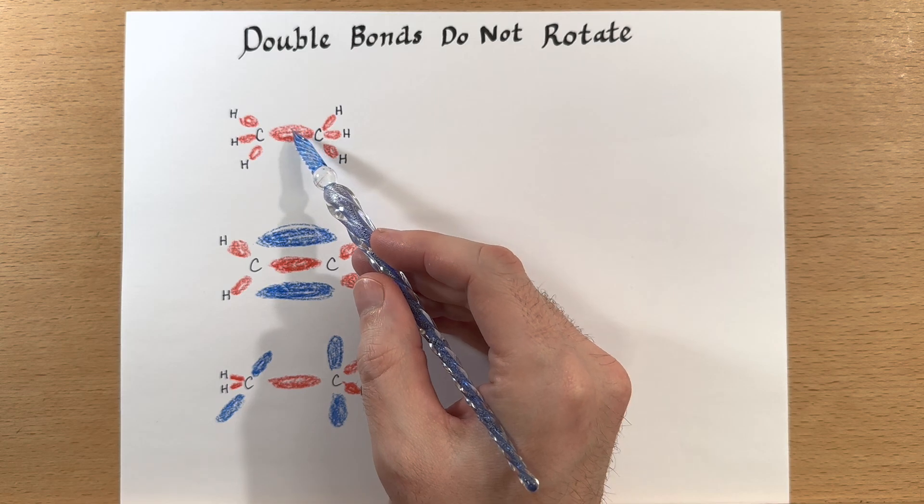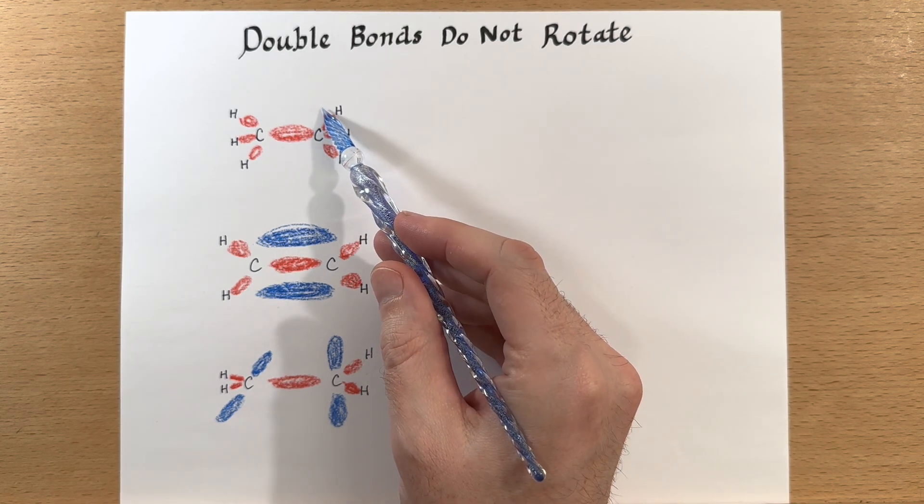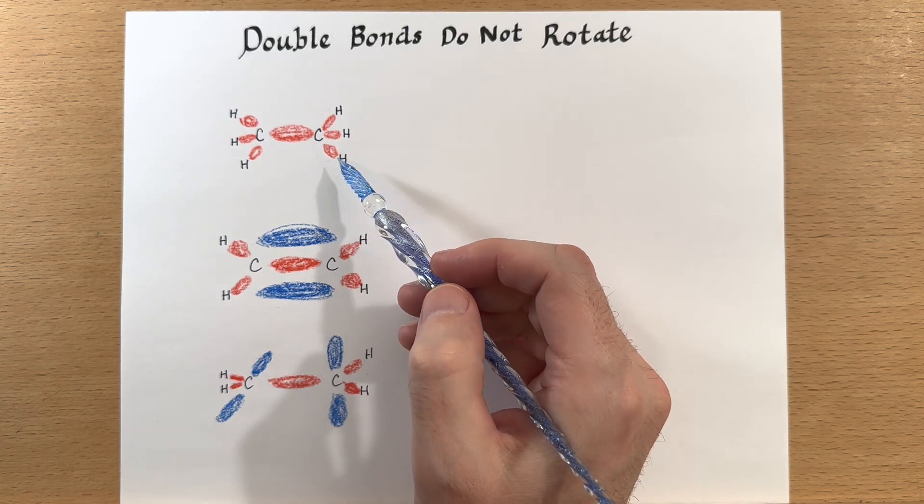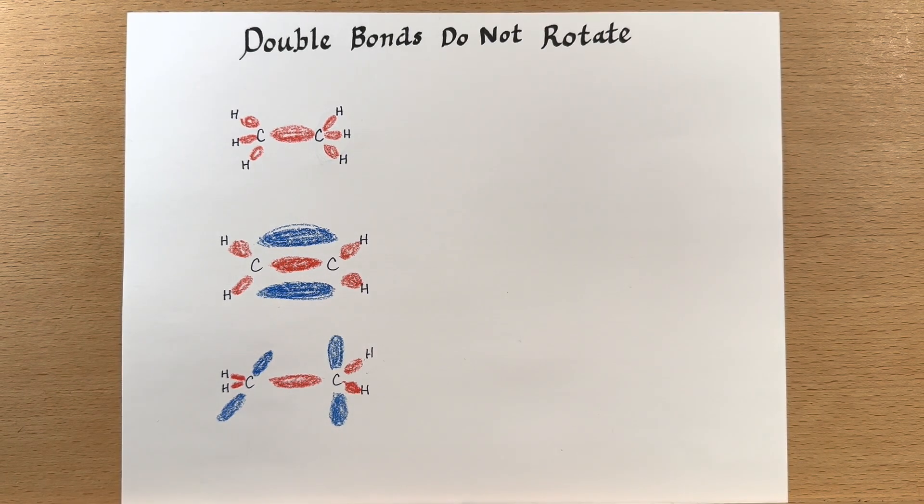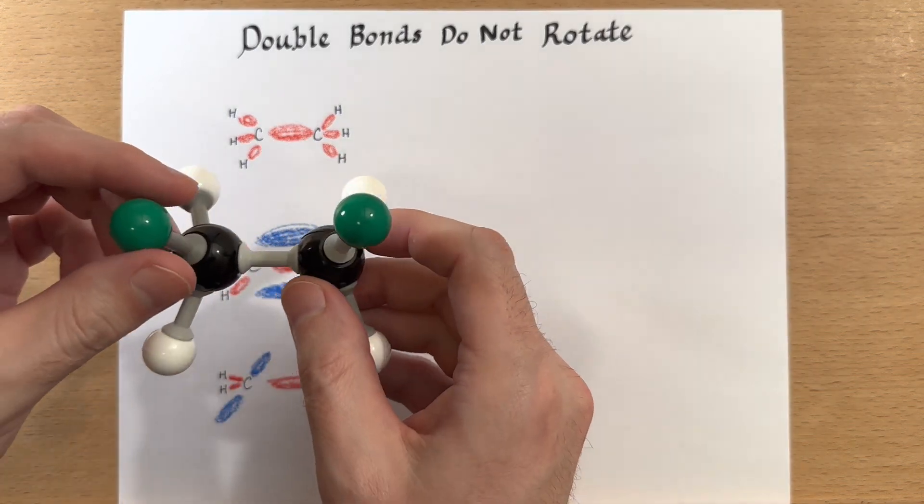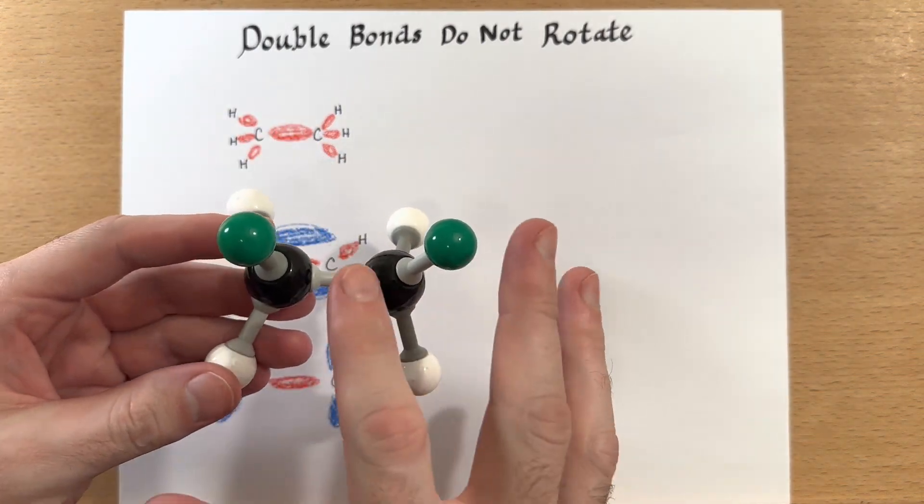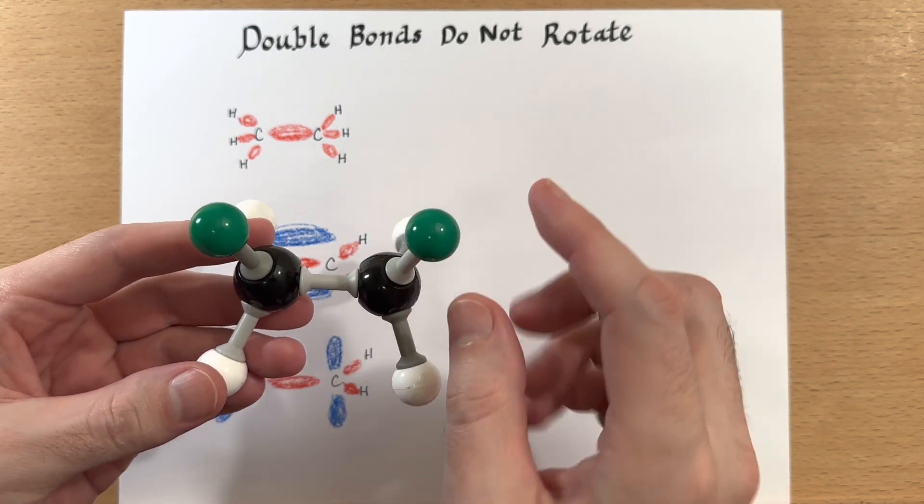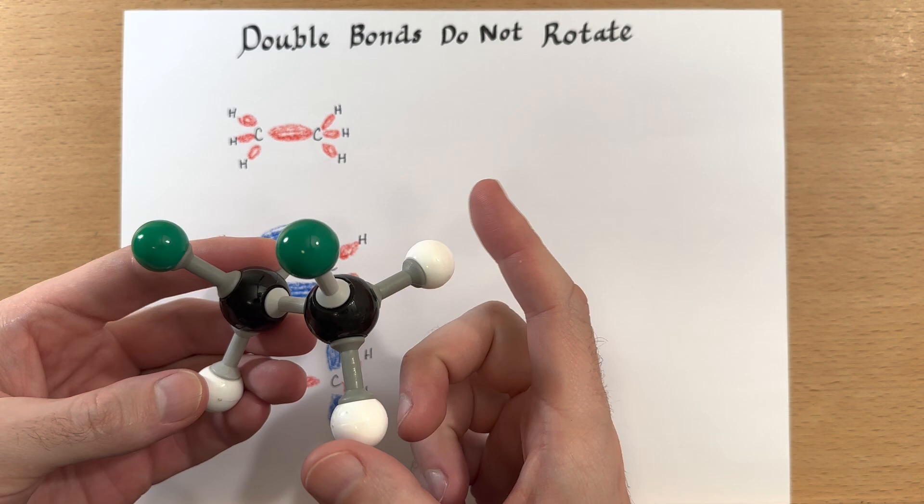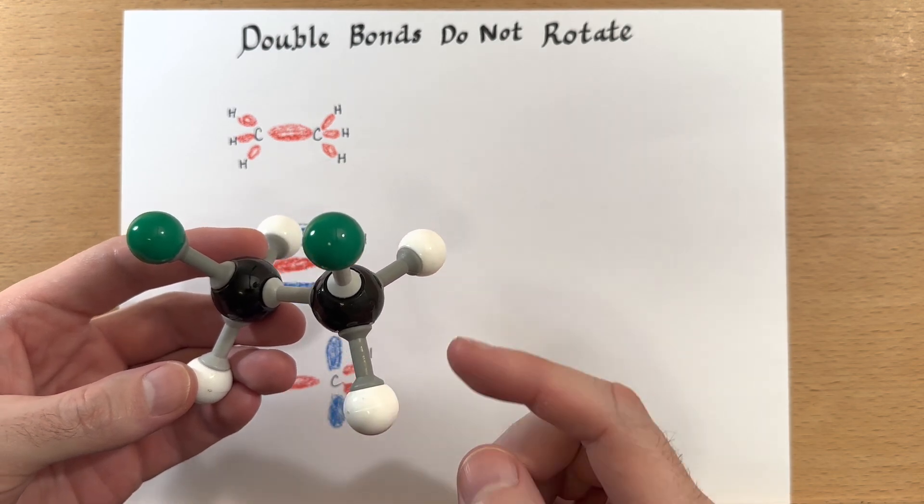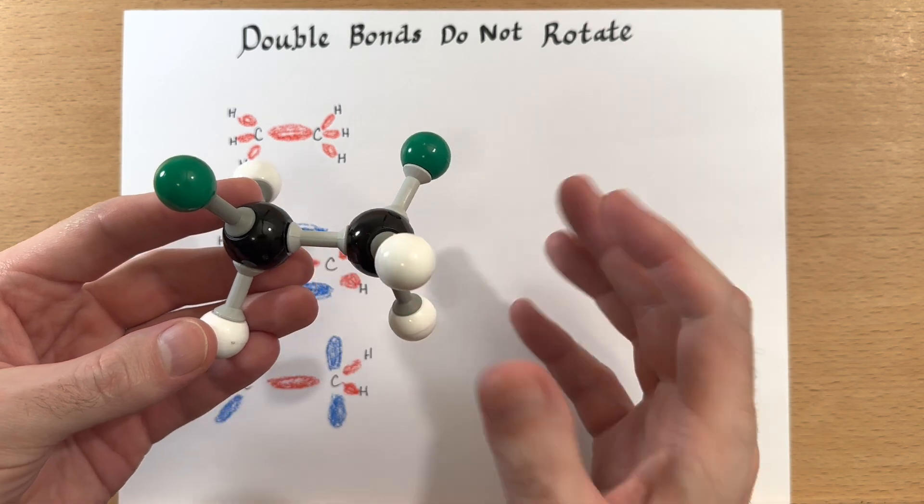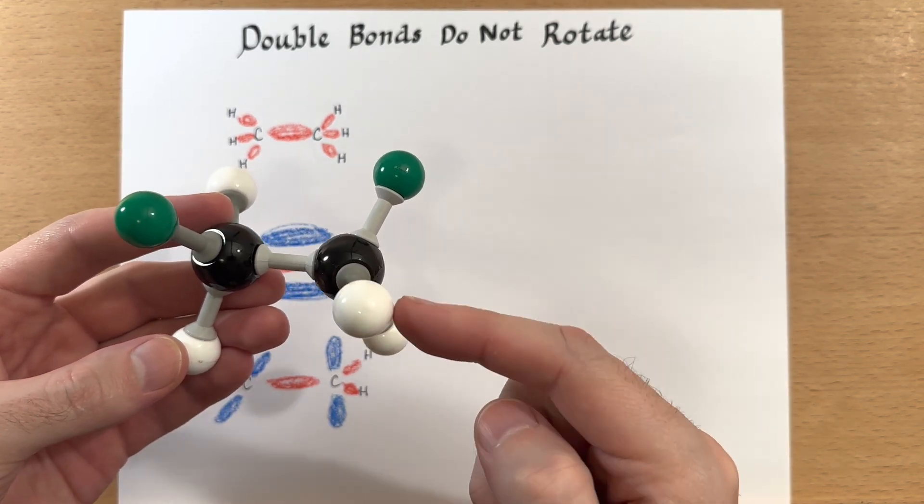And ethane just has a single bond here and we're able to spin these hydrogens around that single bond. And I have a molecular model here that's not exactly ethane but I've used two different colors of model kit here just so that we can see that I'm spinning this a little bit easier so that it's a different color than just the white.